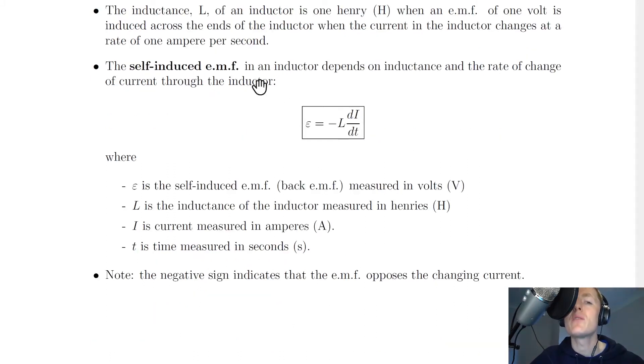And we also have an equation for the self-induced EMF in an inductor, and this depends on the inductance and the rate of change of current through the inductor. So we use the symbol epsilon to mean self-induced EMF, which is the same as back EMF, and this is equal to minus L dI/dt.